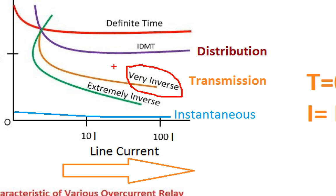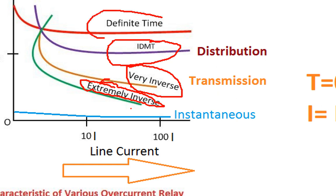We will look at the very inverse type. In the very inverse, the operating time decreases more steeply with increasing current. We will also use extreme inverse — if you have an earth fault on a distribution line, extreme inverse is used for heavy faults. If it is a very inverse, that is the concept.